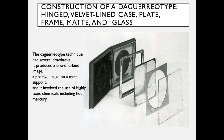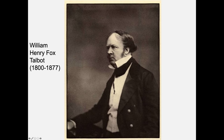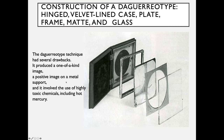The daguerreotype technique, however, had several drawbacks. It produced a one-of-a-kind image — just one positive image on a metal support, similar in concept to a Polaroid. It also involved the use of highly toxic chemicals, including hot mercury, which is really bad for you. The daguerreotype has a mirrored surface, and they were placed in little cases with velvet and a piece of glass to protect the metal surface from being scratched.